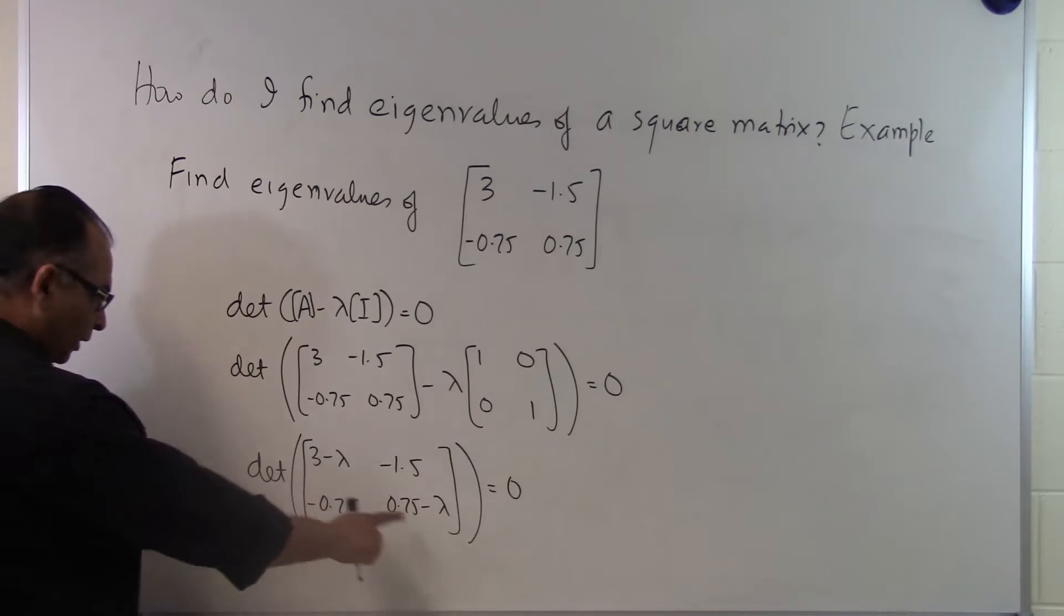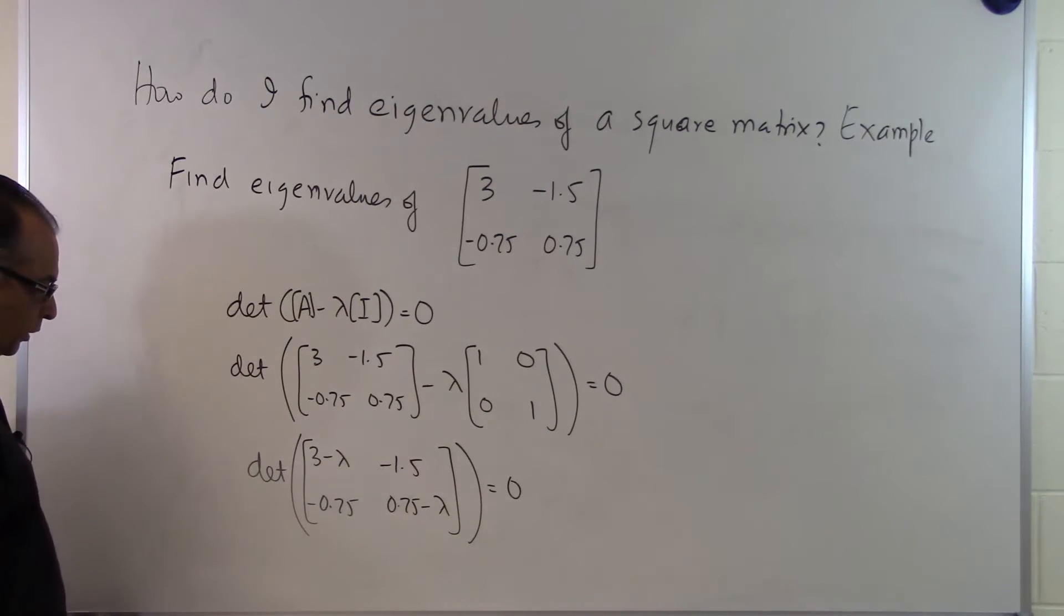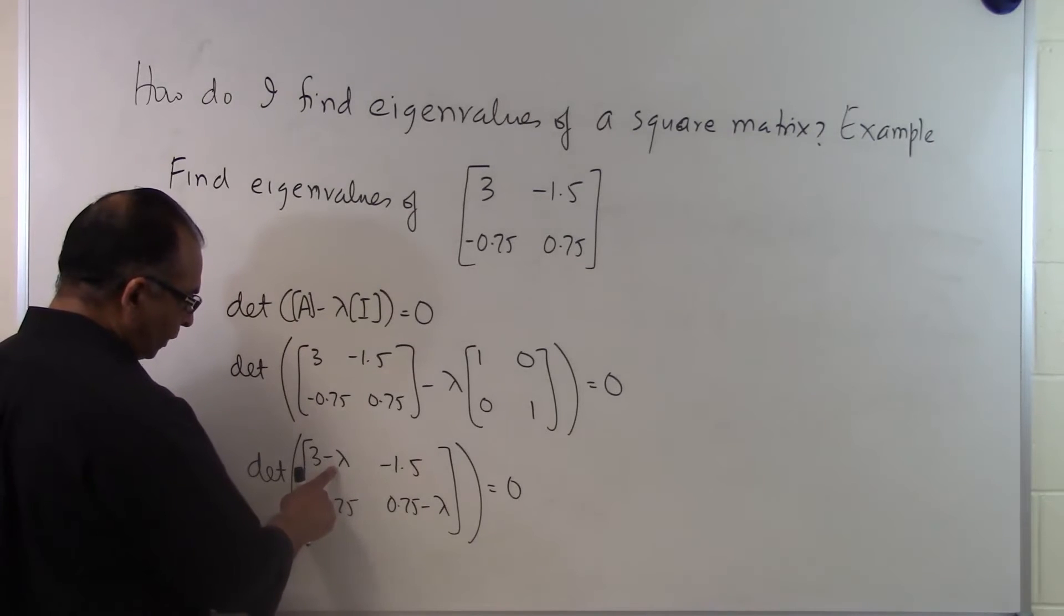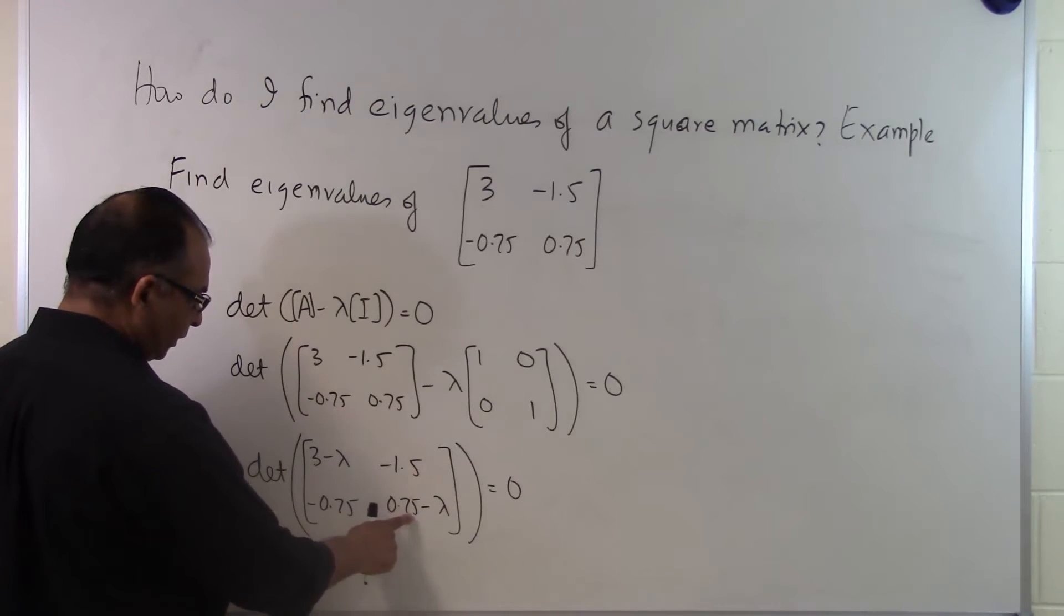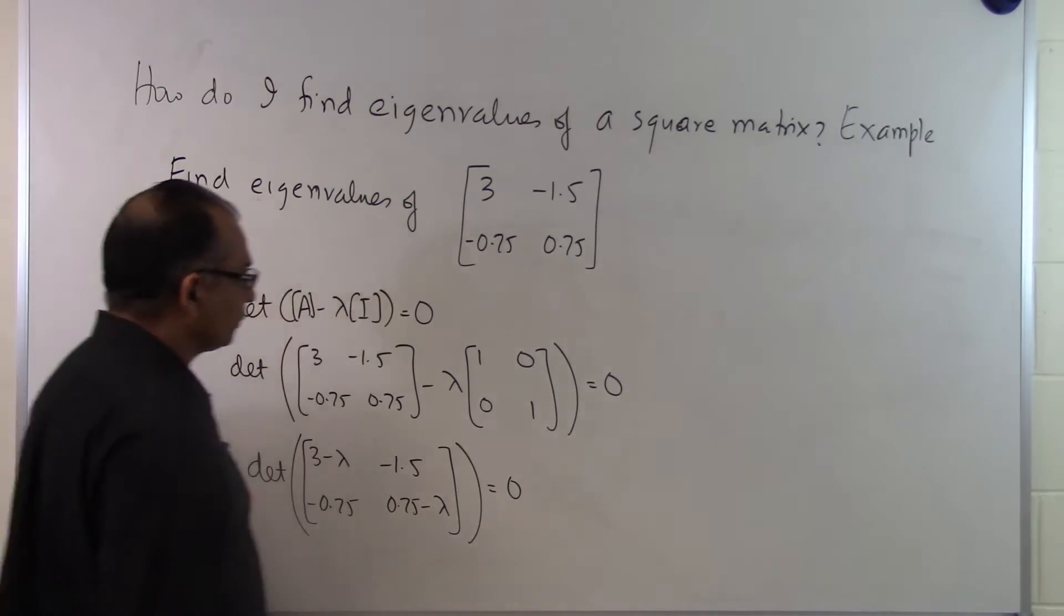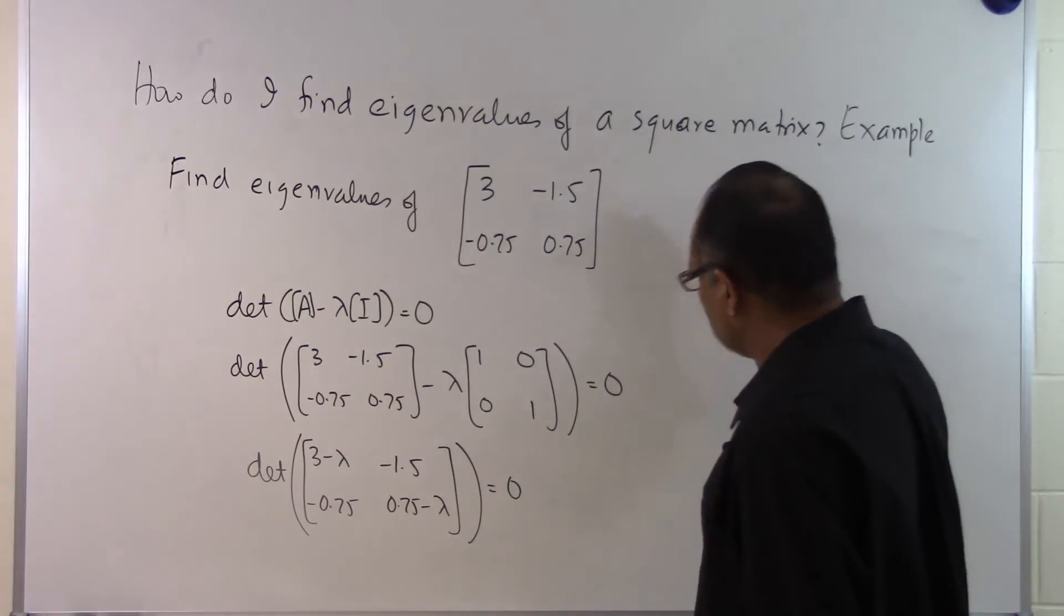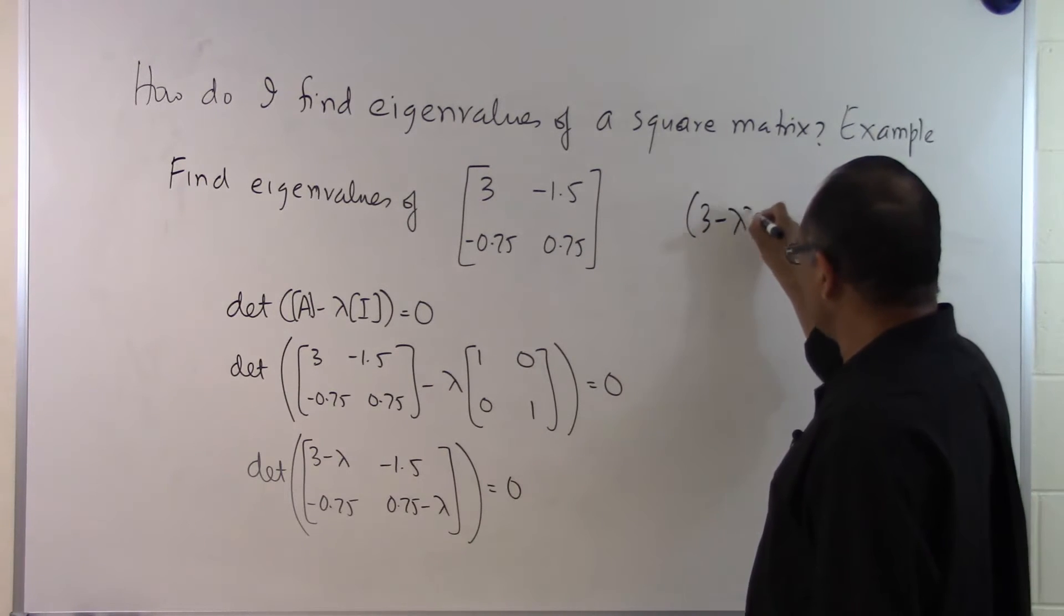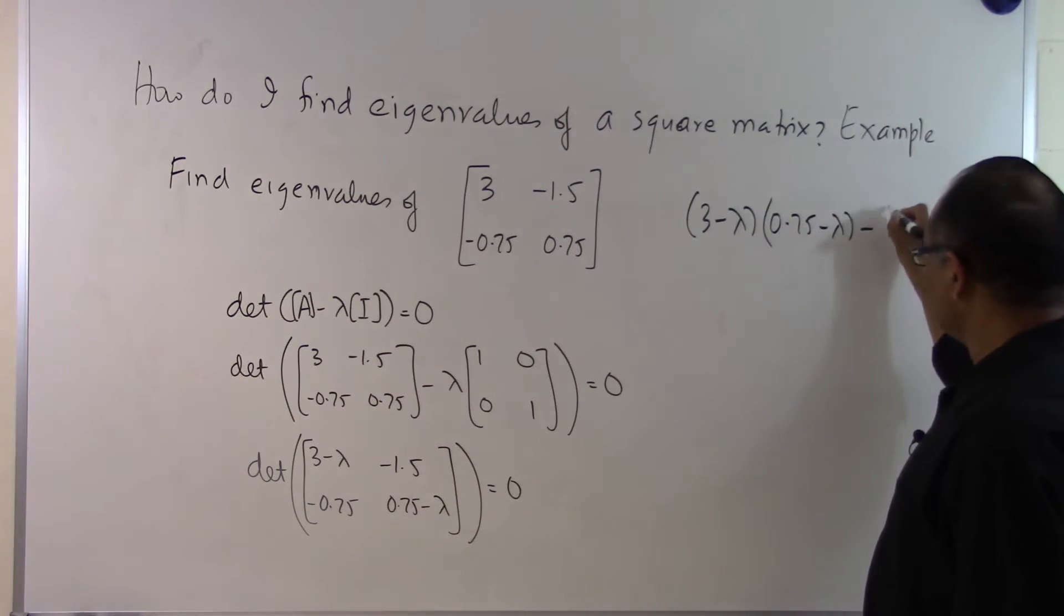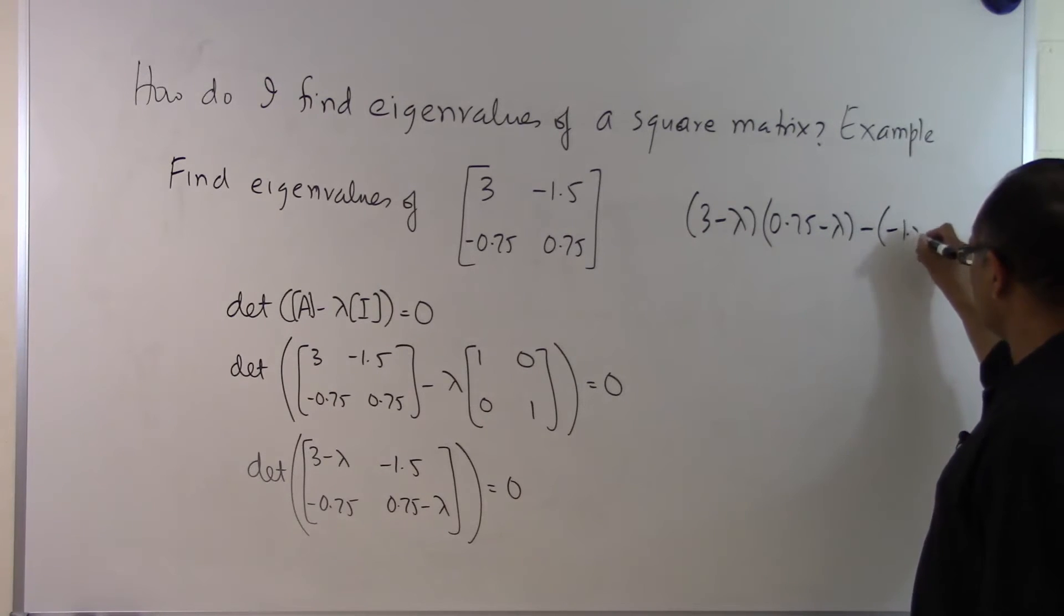So we need to find the determinant of this matrix and set it equal to zero. The determinant of a 2×2 matrix is simple: multiply the diagonal elements and subtract the product of the off-diagonal elements. This gives us (3 - λ)(0.75 - λ) - (-1.5)(0.75) = 0.